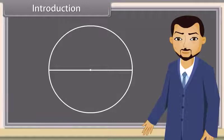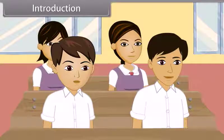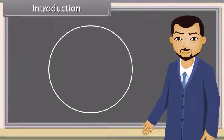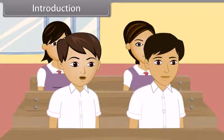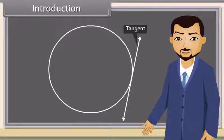Yes, you are right. And what if I mark a line segment here? What is this now? It's a chord. Correct. And what do we call this line? Tangent. Yes, this is a tangent of the circle. Today we will study about circles and tangents.